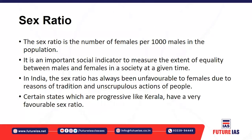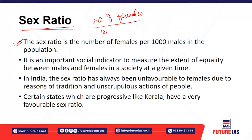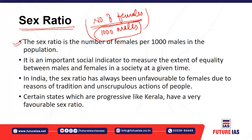The next concept is sex ratio. Sex ratio means the number of females per thousand males in a population — how many females are there for every 1,000 males, in a district, village, country, or any other scale. It is the most important social indicator because it shows the extent of equality between males and females.